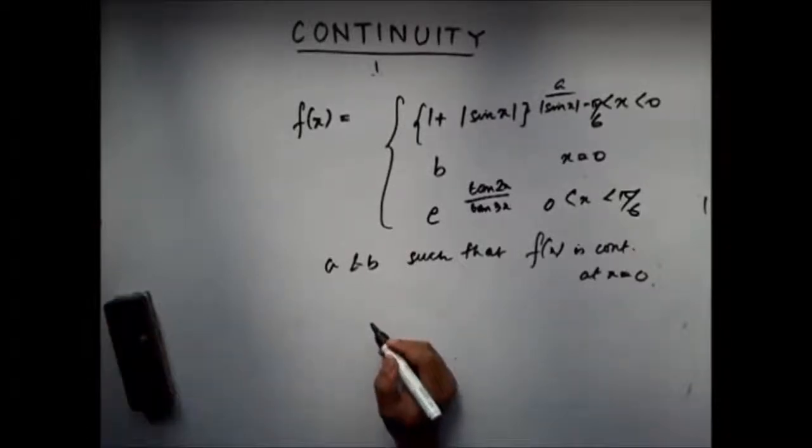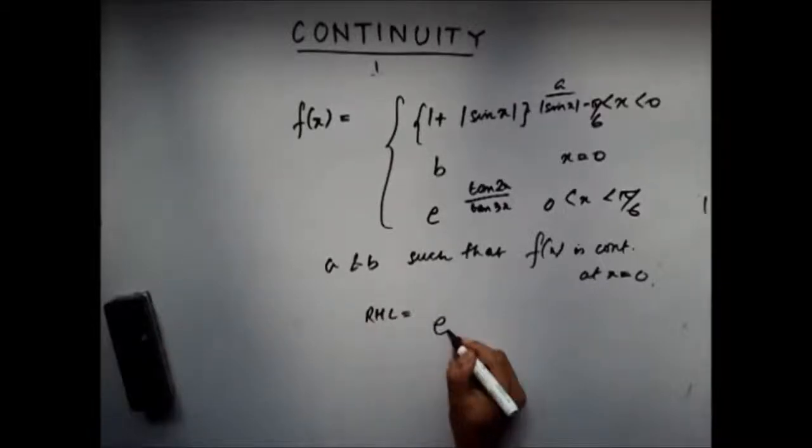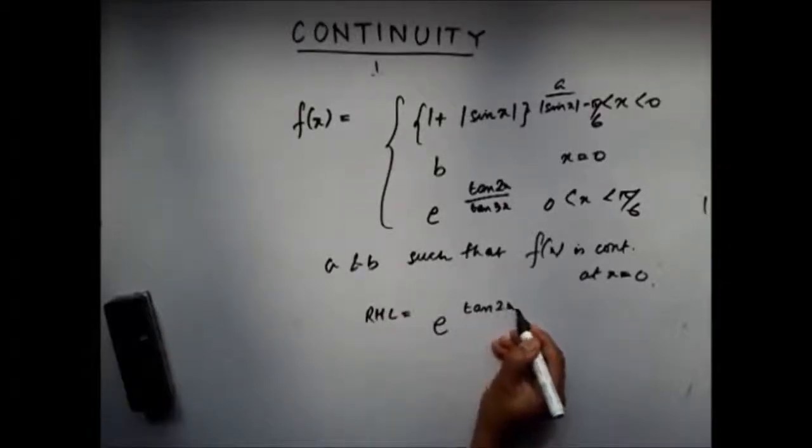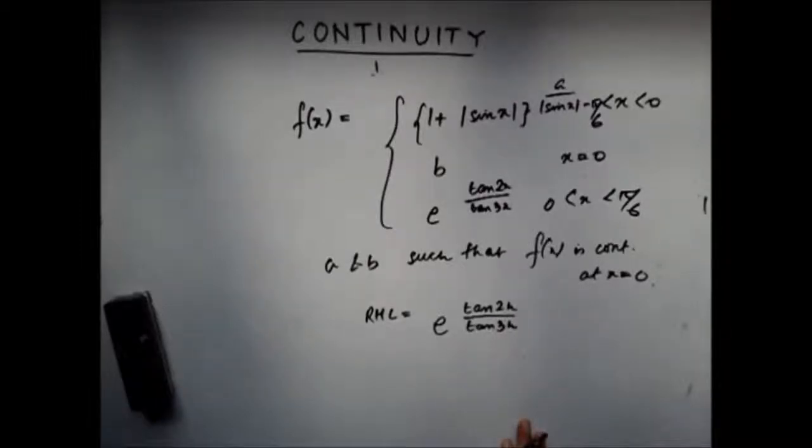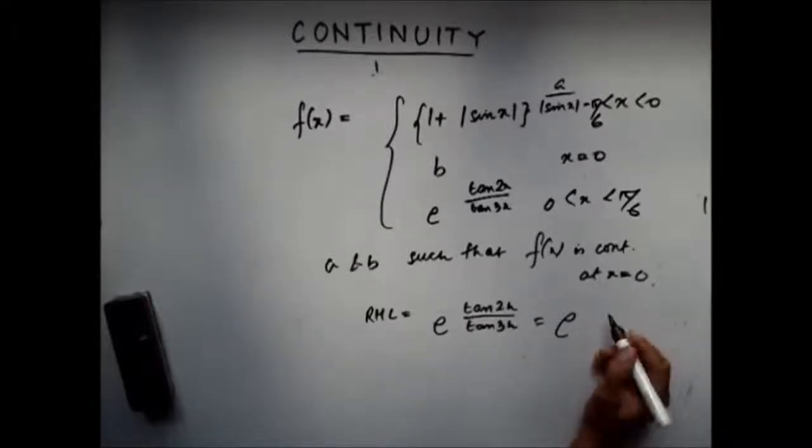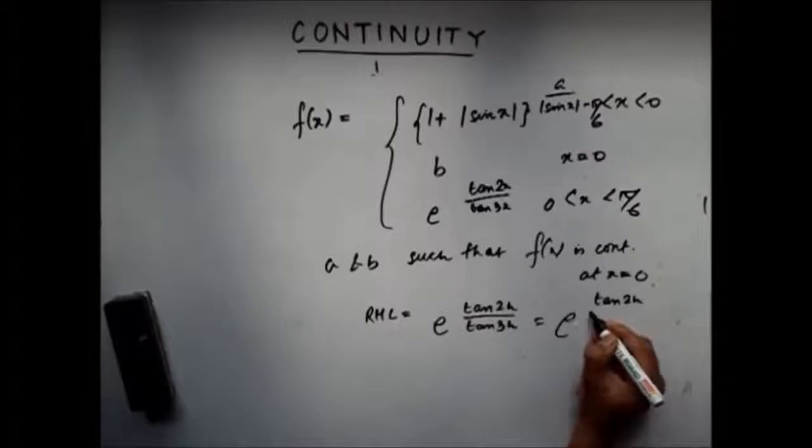First, start with the right-hand limit. The right-hand limit is e^(tan 2h / tan 3h). Now, assuming that we have studied the chapter of limits properly, I will directly proceed with the answer.